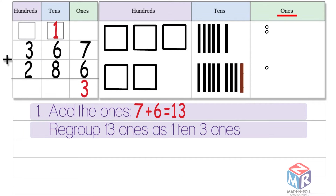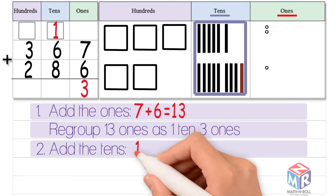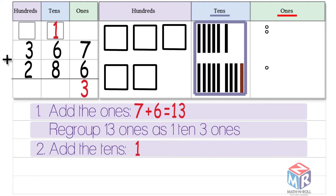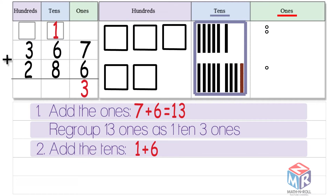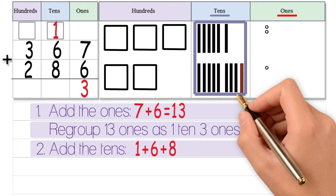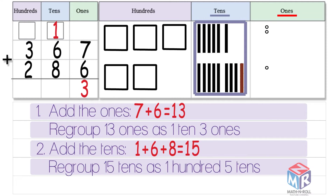Now we add the tens: one bar, plus six bars, plus eight bars is equal to 15. 15 is a two-digit number, so it does not fit into the tens place, so we have to regroup it. We regroup it as one hundred and five tens.